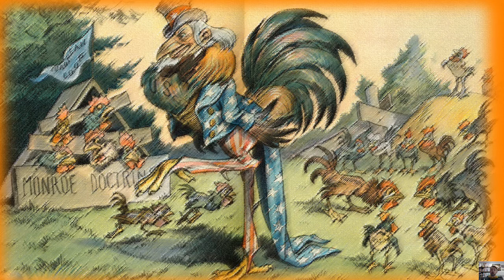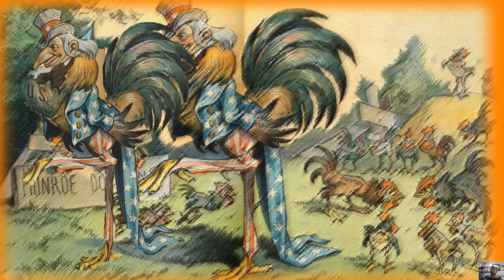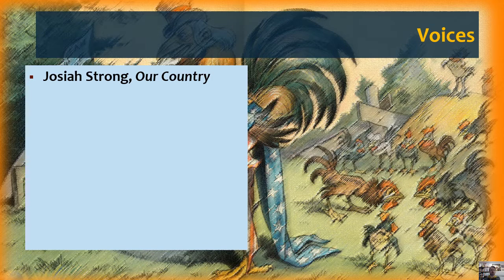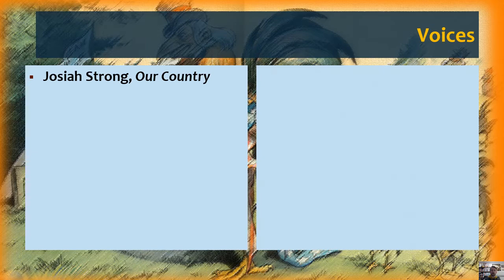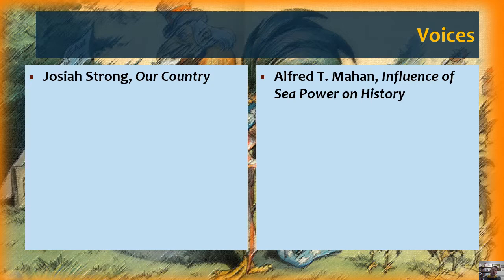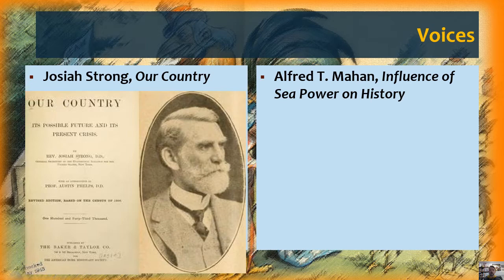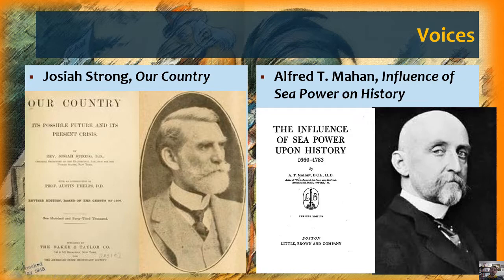There are many voices for imperialism in the 1890s. Our first pro-imperialist voice is Josiah Strong, whose book Our Country praises Anglo-Saxon culture. He comes at imperialism with a missionary eye — this is about Christianity and spreading civilization. Our second voice is Alfred T. Mahan, whose Influence of Sea Power on History sees imperialism from a strategic point of view. He argued that the most powerful empires on the planet have navies, and navies need bases.